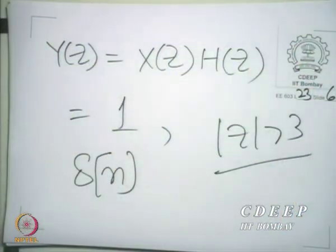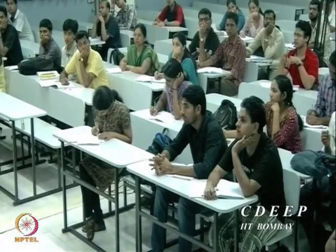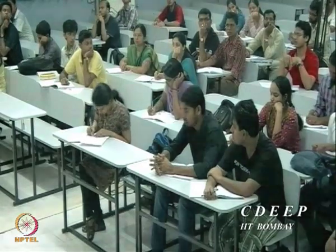A student asked why the region of convergence is |z| > 3. The answer is that the region of convergence is at least the intersection. Here, |z| > 3 is the minimum part; the region of convergence may expand — in this case it goes all over the z-plane. But we are sure there is a region of convergence to begin with, so |z| > 3 is at least the region of convergence.